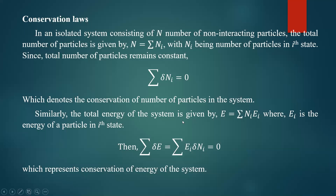These two laws are very important in studying the Maxwell-Boltzmann distribution function and other quantum mechanical distribution functions. One is the conservation of number of particles: summation of delta ni equals zero. The conservation of energy is mathematically represented as summation of ei times dni equals zero. These two are called the conservation laws.